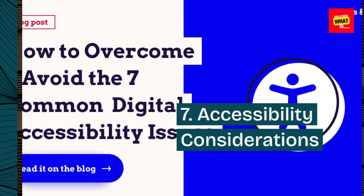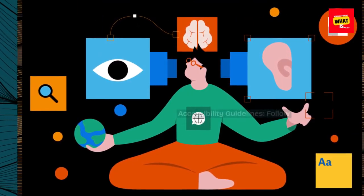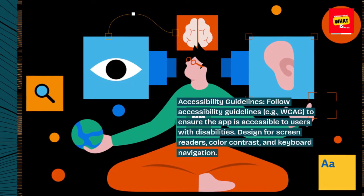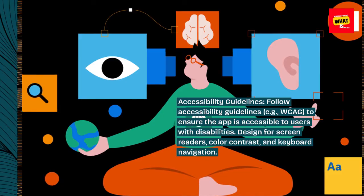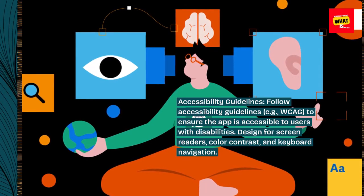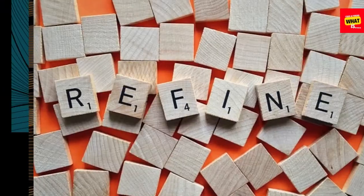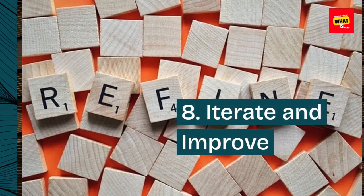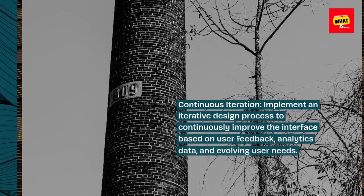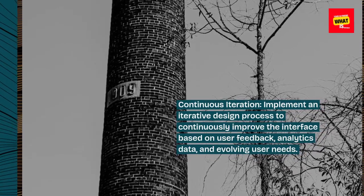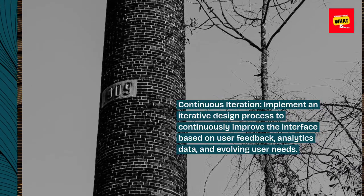Step 7: Accessibility considerations. Follow accessibility guidelines, e.g. WCAG, to ensure the app is accessible to users with disabilities. Design for screen readers, color contrast, and keyboard navigation. Step 8: Iterate and improve. Implement an iterative design process to continuously improve the interface based on user feedback, analytics data, and evolving user needs.